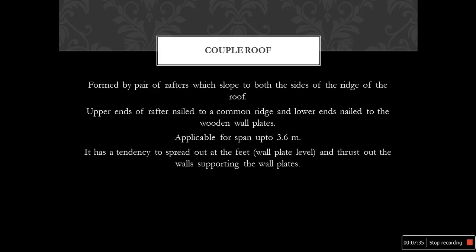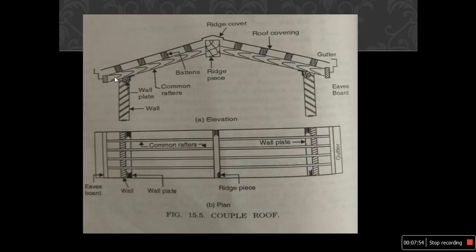Couple roof is formed by a pair of rafters which slope to both sides of the ridge. The upper ends of the rafters are nailed to a common ridge and lower ends nailed to the wooden wall plates. This couple roof is applicable for a span up to 3.6 meters. The elements include ridge, roof covering, common rafter, ceiling joist, gutter, eave boards, ridge, column, rafters, wall plates, and wall.